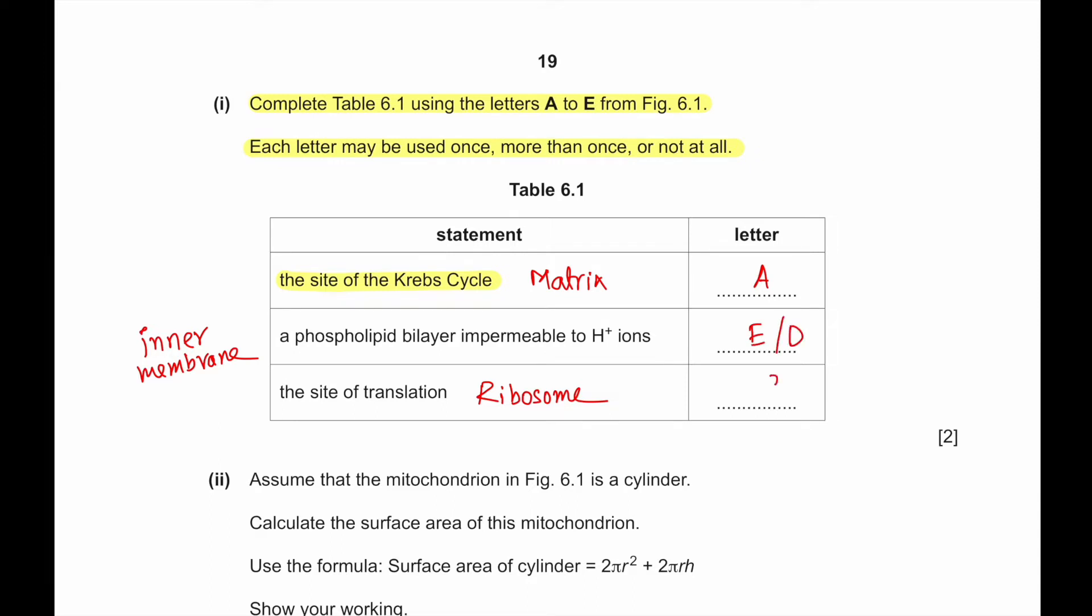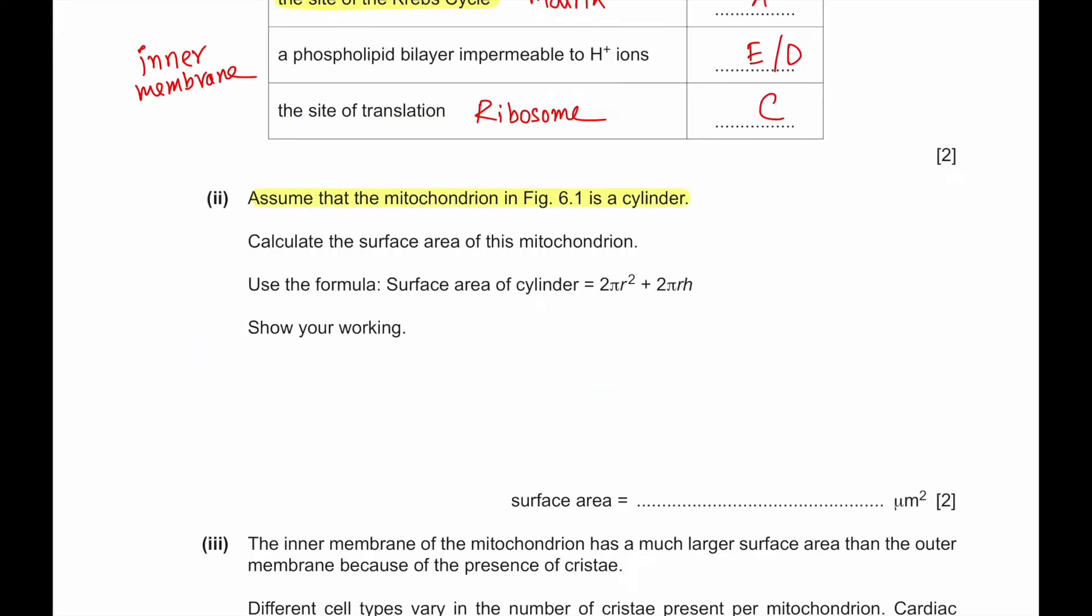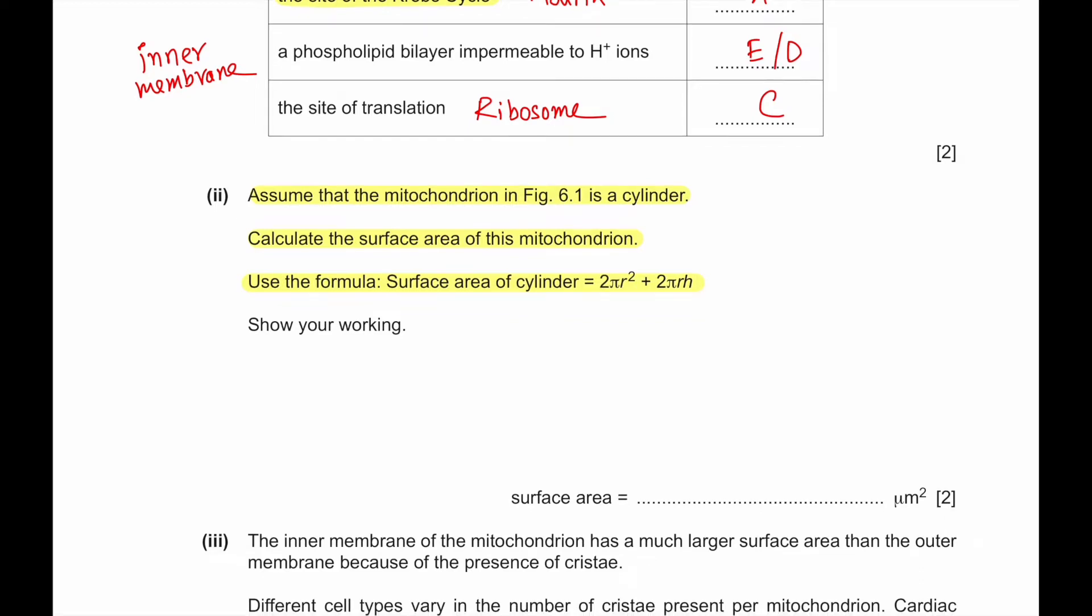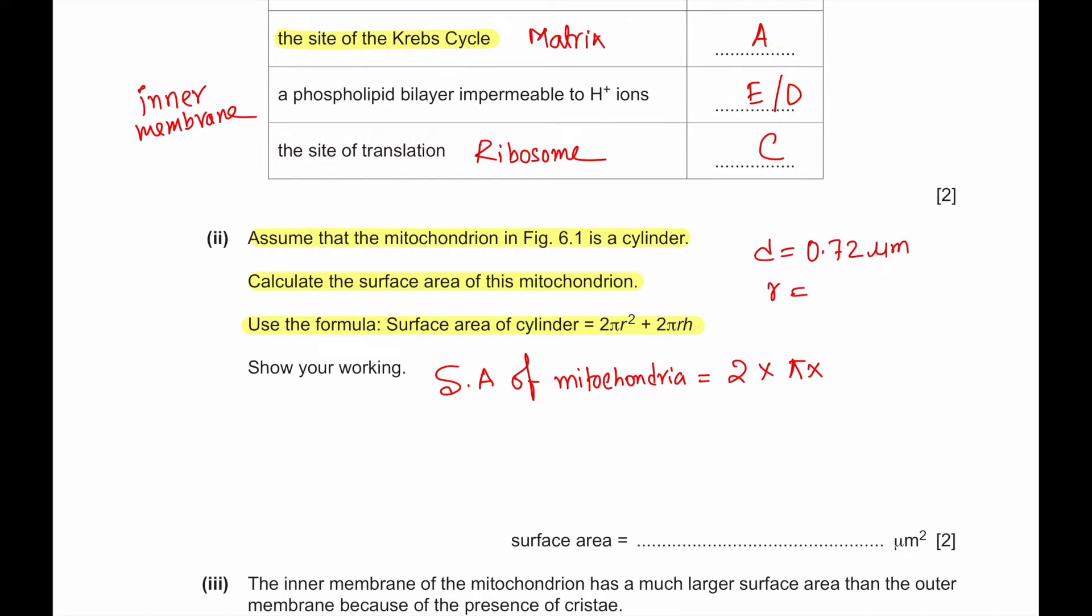Assume that the mitochondrion in figure 6.1 is a cylinder. Calculate the surface area using the formula surface area of cylinder equals 2πr² + 2πrh. The diameter is 0.72 micrometer, so the radius is 0.36 micrometer.